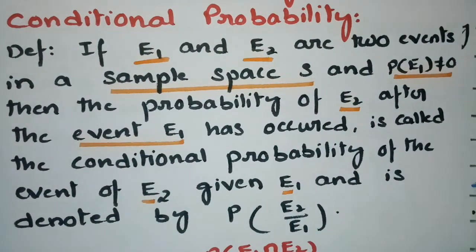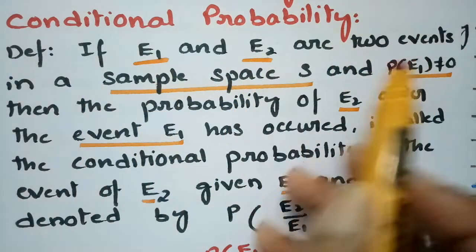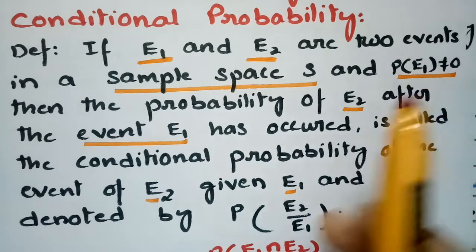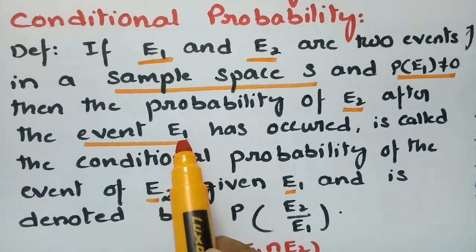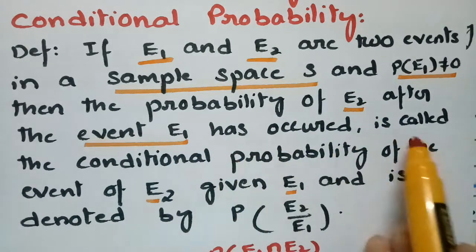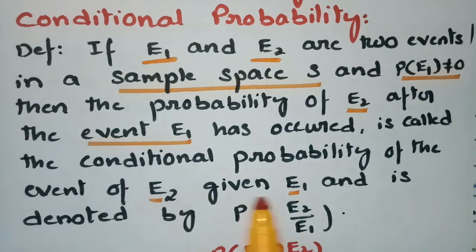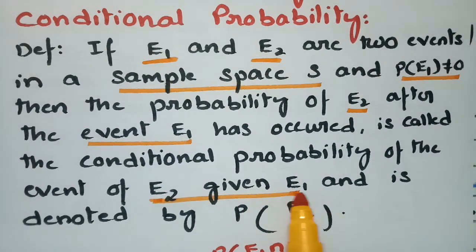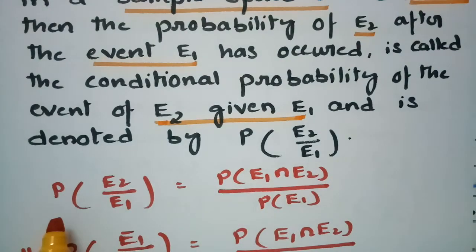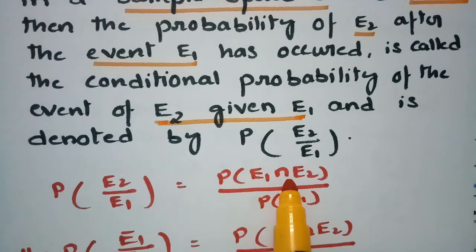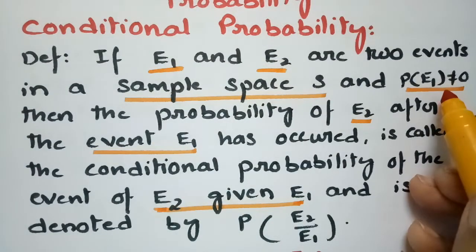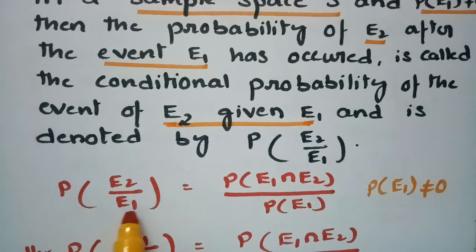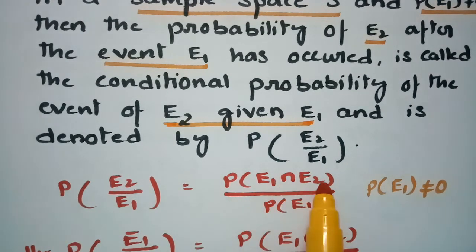For conditional probability: if E1 and E2 are two events in a sample space S and P(E1) ≠ 0, then the probability of E2 after event E1 has occurred — E1 should happen first, then E2 — is called the conditional probability of E2 given E1. It is denoted as P(E2|E1) = P(E1 ∩ E2) / P(E1), where P(E1) ≠ 0. Similarly, P(E1|E2) = P(E1 ∩ E2) / P(E2).